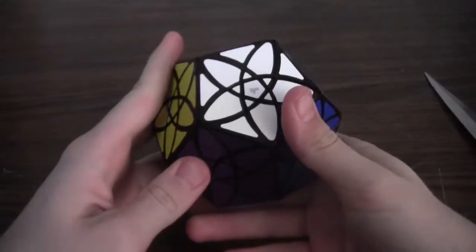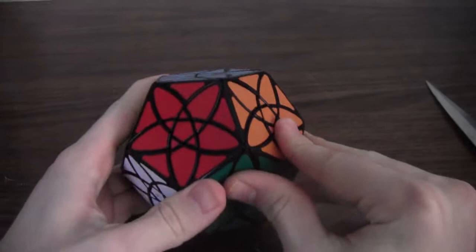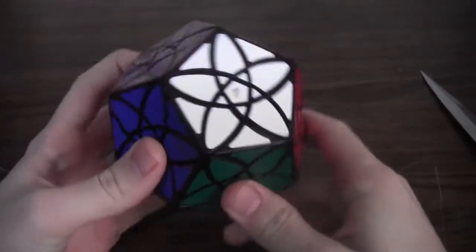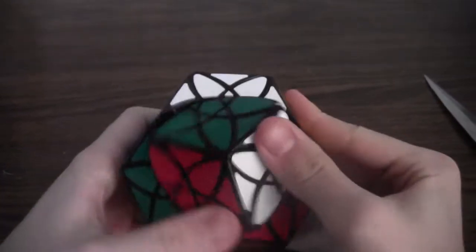This is the Rexcube Dodecahedron. I have a Rexcube, and so this is the same size as a Gigaminx, and that's how it turns. That is cool.